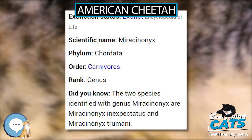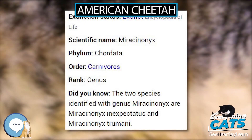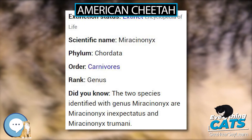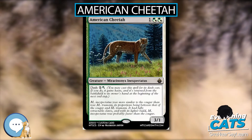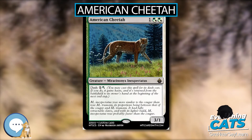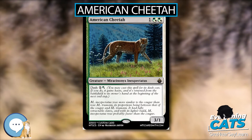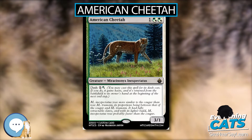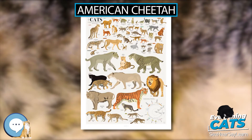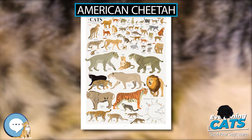The two species commonly identified are M. Inexpectatus and M. Trumini. Sometimes a third species, M. Studeri, is included, but it is more often listed as a junior synonym of M. Trumini.